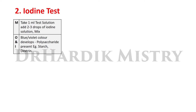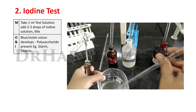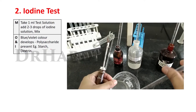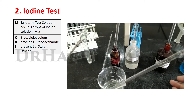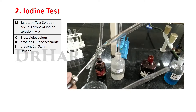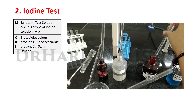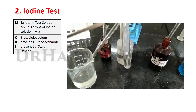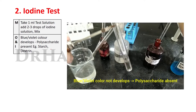Method, observation, and inference of iodine test. Method: Take 1 ml test solution. Add 2 to 3 drops of iodine and mix. Observation: Blue or violet color develops. Inference: Polysaccharide is present, including starch and dextrin.